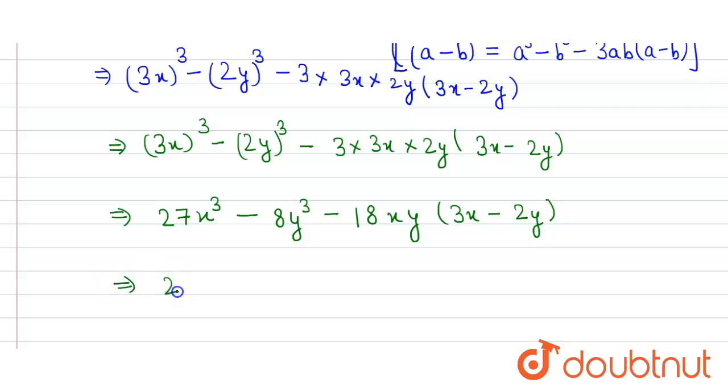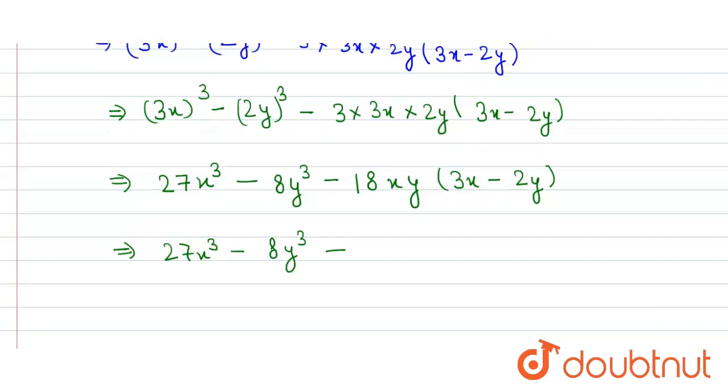We get 27x³ - 8y³, and here minus 18 × 3 equals 54x²y. Here minus minus becomes plus, and 18 × 2 equals 36.